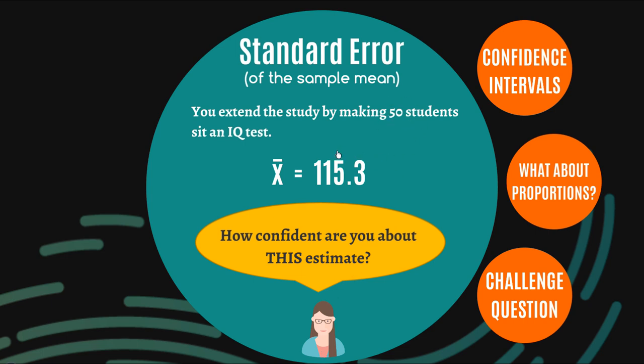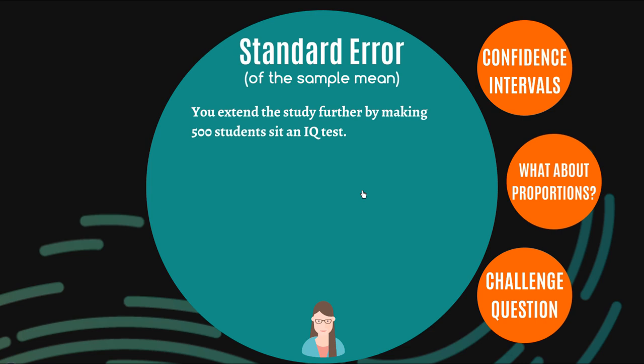And then we can take it to the extreme and say, well, look, if we sampled 500 students and got them to sit an IQ test, and say this is our mean, 114.7, now how confident are you? Well, you're very bloody confident at this stage, right?